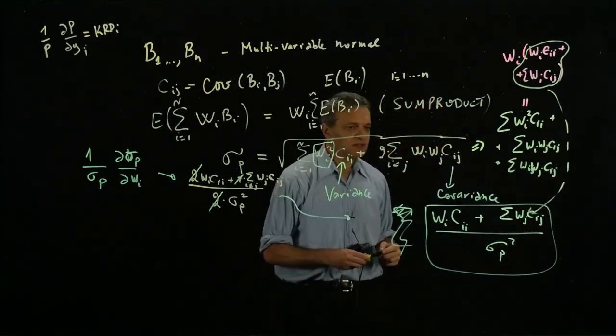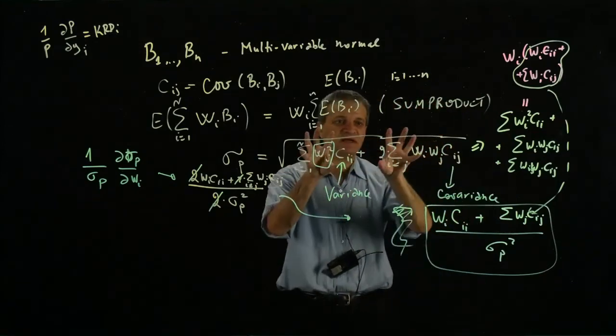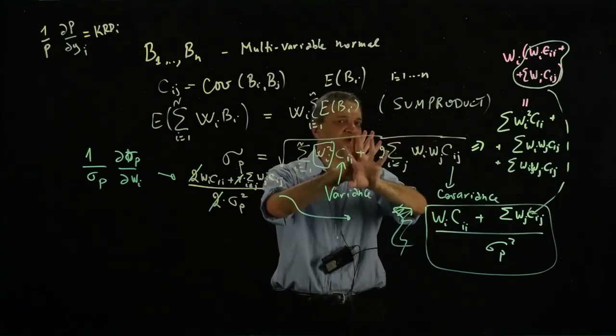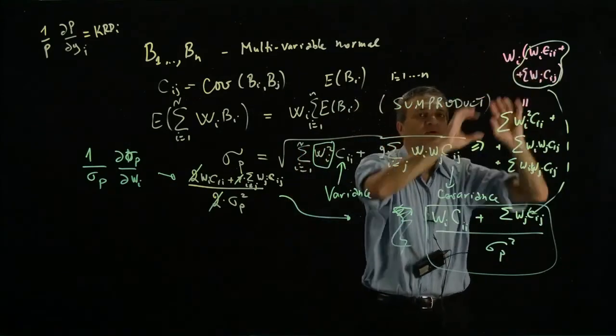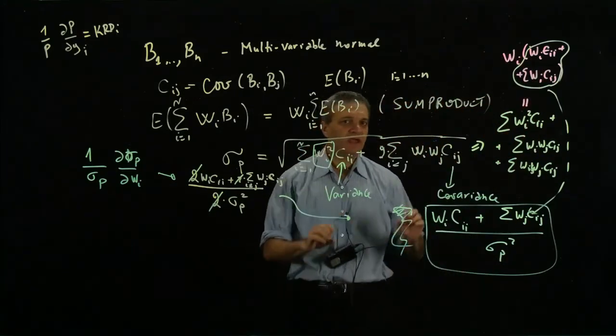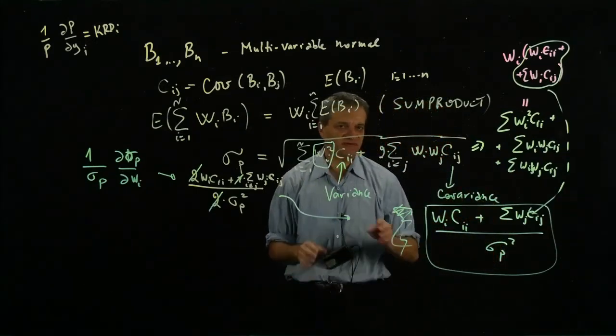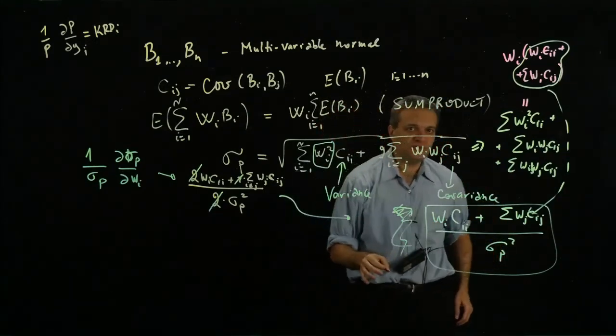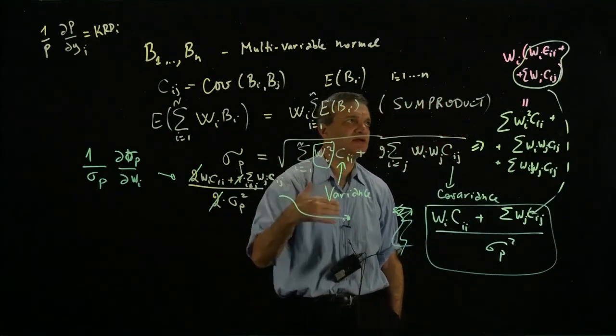So what you're getting is that if you take your original expression and decompose the numerator into those wi buckets, you get exactly the same formula. As I told you in class, this is the interpretation of risk decomposition.